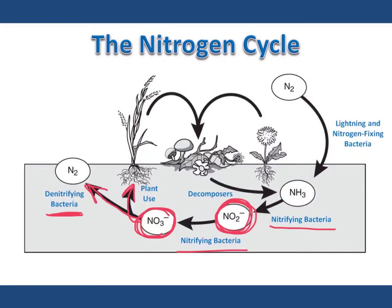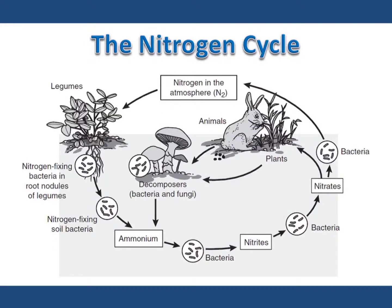There are also denitrifying bacteria in the soil. These bacteria take the nitrates and convert them back into atmospheric nitrogen, which travels back into the air. This helps to replenish the nitrogen gas in the atmosphere. Decomposers also play a vital role in the nitrogen cycle — they convert the nitrogen-containing compounds found in the dead tissues of plants and animals back into ammonia, placing that nitrogen back into the nitrogen cycle.